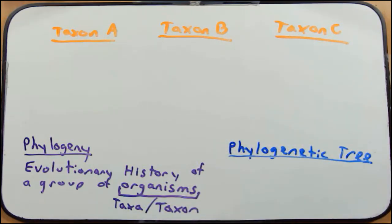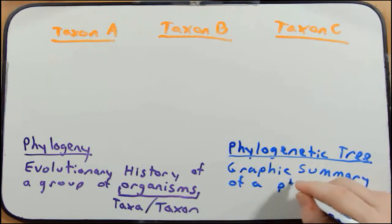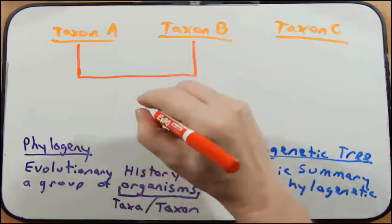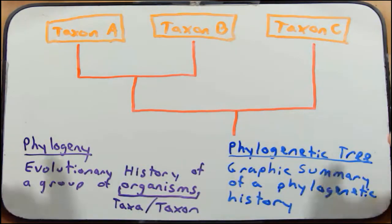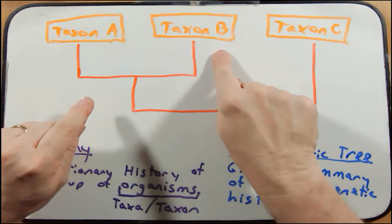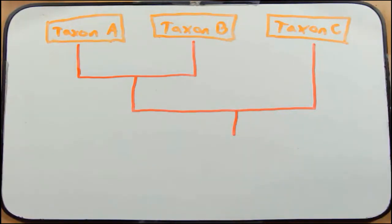A phylogenetic tree is the graphic summary of a phylogenetic history. The phylogenetic tree I just drew here helps explain how taxon A is related to taxon B, how A is related to C, and how B is related to C. What we want to do now is talk a bit more about that relationship. Before we do that, I want to talk about what kind of phylogenetic tree this is — it's similar to what we've drawn before, but we haven't really talked about its name. You should know that there are many different types of phylogenetic trees.